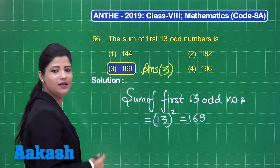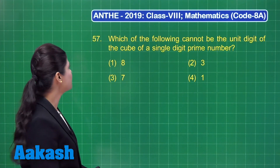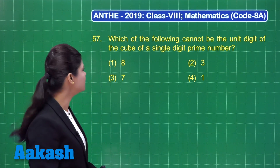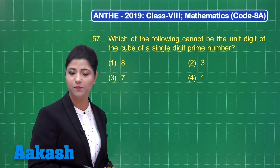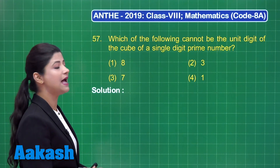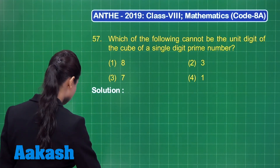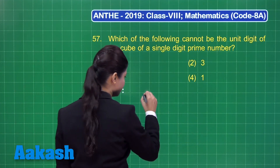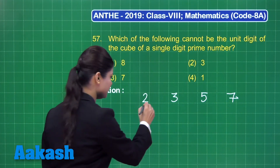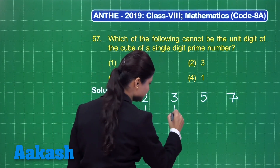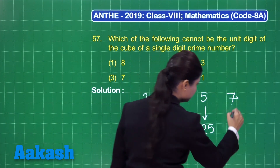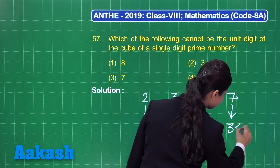Let us take up question number 57, which states: which of the following cannot be the unit digit of the cube of a single digit prime number? The options are 8, 3, 7, and 1. The single digit prime numbers are 2, 3, 5, and 7. Taking their cubes: 2 cubed is 8, 3 cubed is 27, 5 cubed is 125, and 7 cubed is 343.